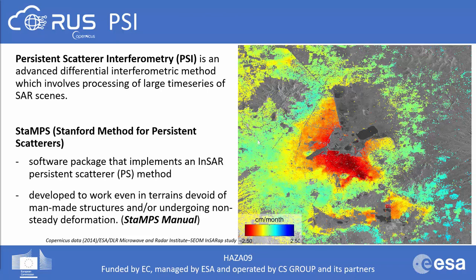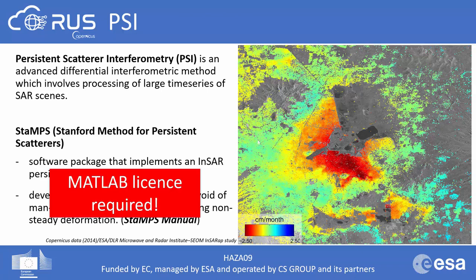StaMPS is a software package that implements an InSAR persistent scatterer method as well as a small baselines method, developed to work even in terrains devoid of man-made structures or undergoing non-steady deformation. Note that although StaMPS is more or less open source, it is partly written in MATLAB and uses built-in MATLAB functions, so a MATLAB license is necessary. It is still one of the most cost-efficient softwares for PSI, since commercial software is generally even more expensive. In this exercise we will only look at data preparation, as StaMPS is not a full SAR processing software and does not include tools for interferogram generation.